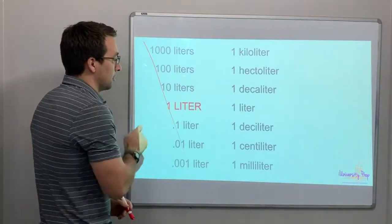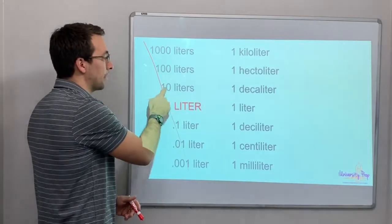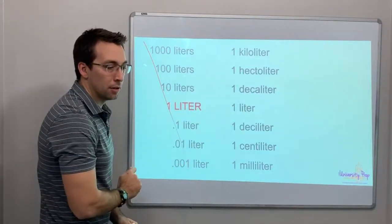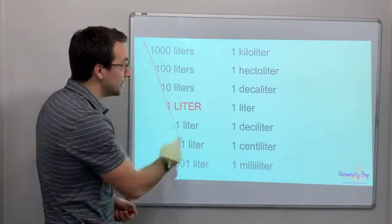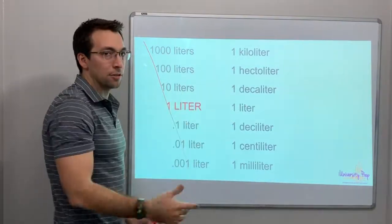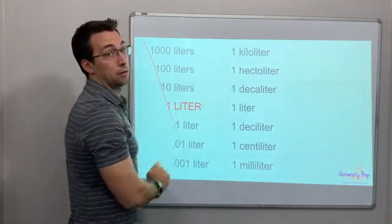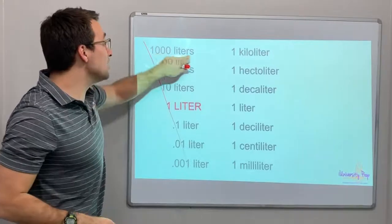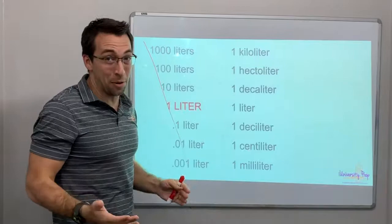So one liter, it's one liter. If you have 10 liters, you add a place value. It's now a decaliter. How many years are in a decade? 10. Decaliter, 10 liters. That's cool. If you have a hundred liters, hectoliter. If you have a thousand liters, that's a kiloliter. It's pretty cool.